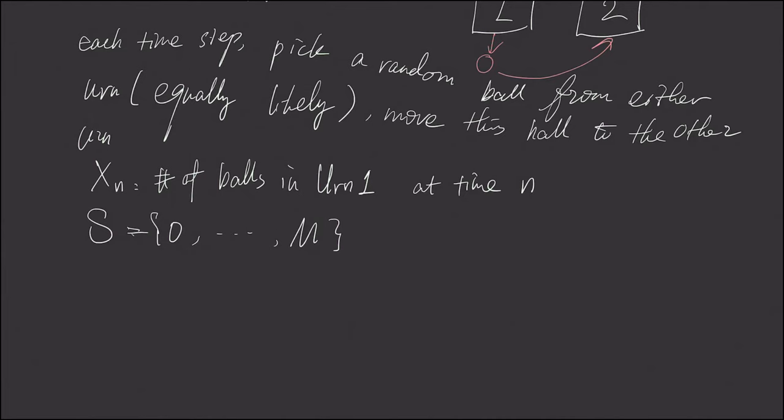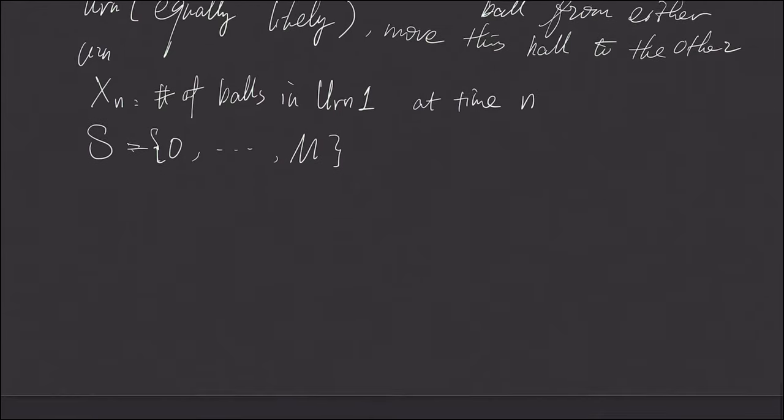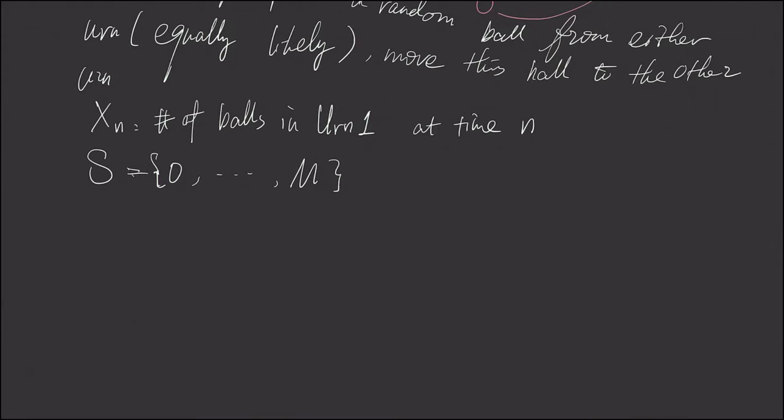And apparently, this is pretty similar to a random walk. That is, because at every time step, we either go up by one, or go down by one. So let's write down the transition probability.